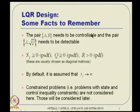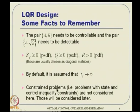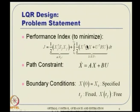Our performance index is (1/2)X_f^T S_f X_f + integral from t_0 to t_f of (1/2)(X^T Q X + U^T R U). In the generic framework, the first term is φ and the integrand is L. The path constraint is the linear equation Ẋ = AX + BU. The Hamiltonian is H = L + λ^T F = (1/2)(X^T Q X + U^T R U) + λ^T(AX + BU).